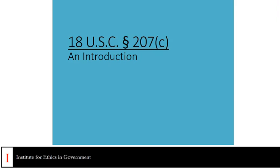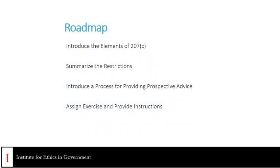Welcome to an introduction to 18 U.S.C. Section 207C, the Post-Employment Statute's One-Year Cooling-Off Period for Senior Employees. In this session, you will be briefly introduced to the statutory elements of the C restriction, and we will provide clarifying summaries of the restriction as well. We'll introduce you to a process that you can use to apply the statutory elements to any facts you may have regarding an employee's proposed post-employment activities in order to provide prospective advice.